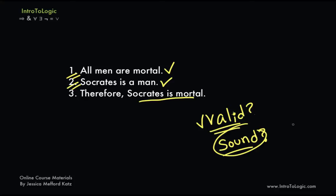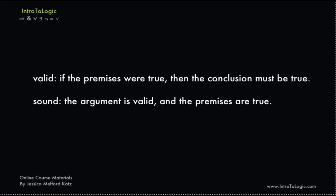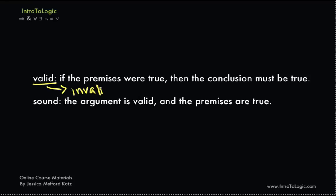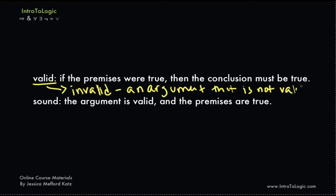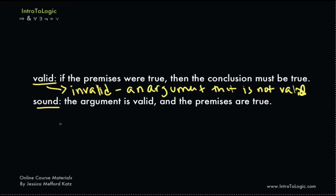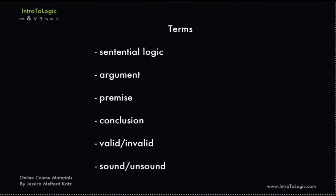So we've seen two kinds of arguments: one that is valid but not sound, and one that is both sound and therefore valid. You may be wondering what exactly an invalid argument is — it's simply an argument that is not valid. And we did see an unsound argument: one that is not sound, which was the first of the two arguments we saw. So in this video we've gone over the following terms: sentential logic, argument, premise, conclusion, valid and invalid, and sound and unsound.